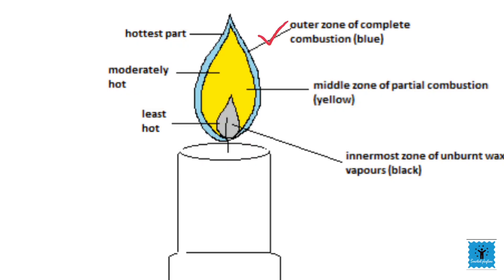The outermost zone is the hottest among all three zones. It is blue in color, and the blue color is due to the complete combustion of the fuel. It is the non-luminous part of the flame.